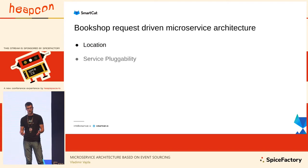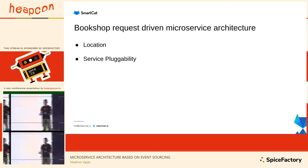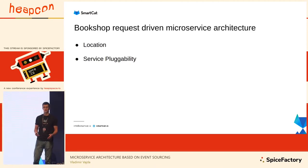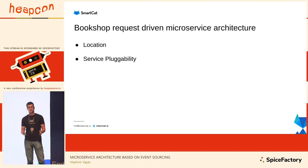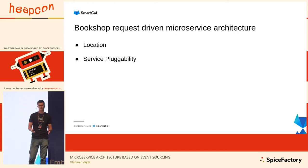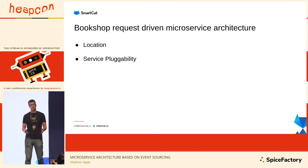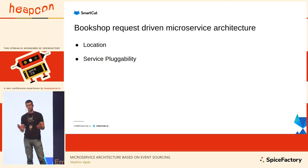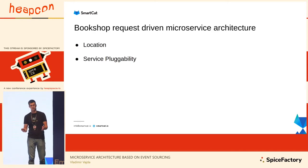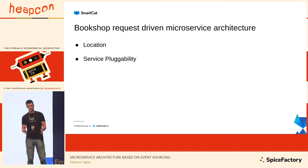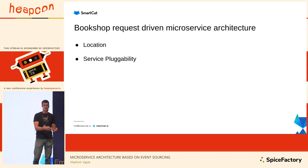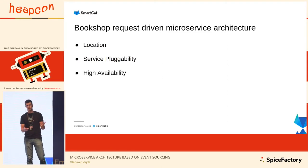The second idea is service pluggability. In this architecture, if you want to introduce an additional service — for example a reporting service or a machine learning service for book recommendations — you need to change the code of your UI backend to send additional requests to this new service. Similarly, if you want to remove a service, for example you're now selling only ebooks and no longer need shipping, you need to change code not to send any requests to the shipping service.